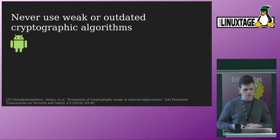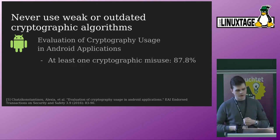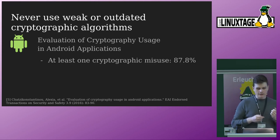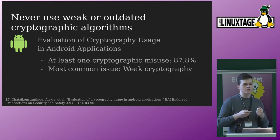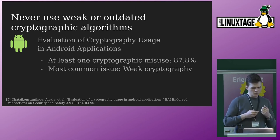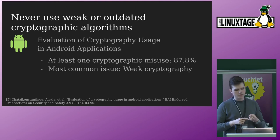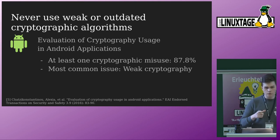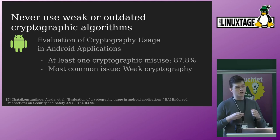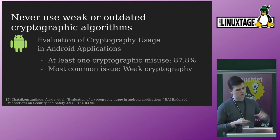This happens unfortunately quite often in Android applications. A study on cryptographic usage in Android applications found that at least 88% of the applications tested had at least one cryptographic misuse, and the most common one is weak cryptography — the usage of outdated methods like SHA-1, MD5, or even ECB mode. Android is a great platform to start programming and publish an app quickly, but it's therefore important to understand which algorithms to stay away from.